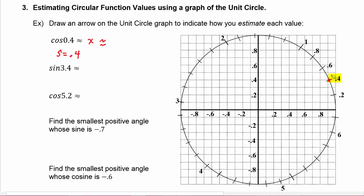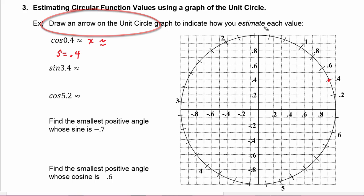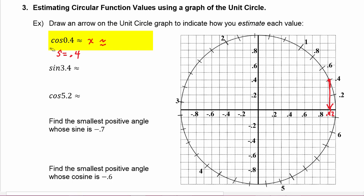From this point where s equals 0.4, we need to get the x-value. That's what the problem means when it says draw an arrow to indicate how you estimate — we're going to draw an arrow from here down to the x-value. That looks like it's just a little bit more than 0.9, so maybe we'll guess 0.92. We estimate that the cosine of 0.4 is about 0.92.